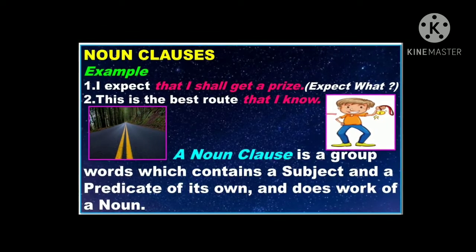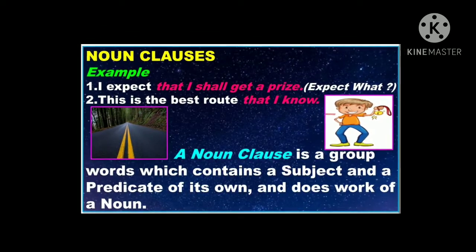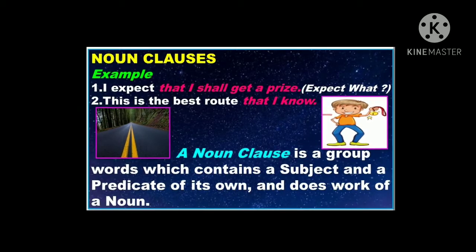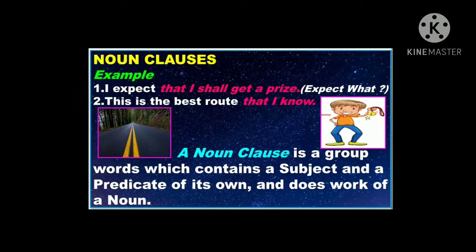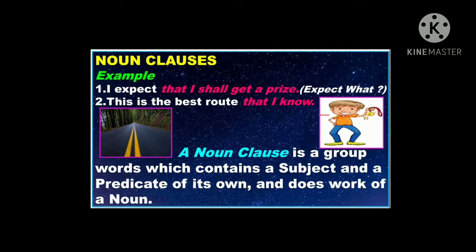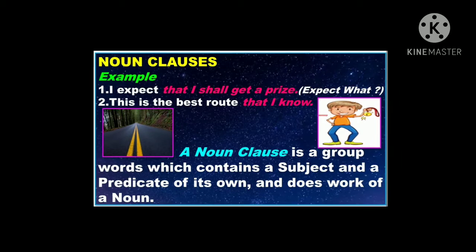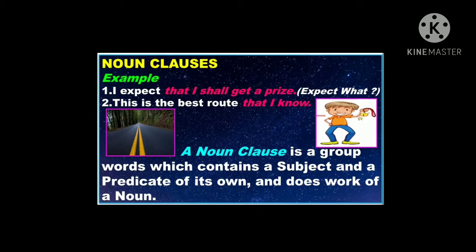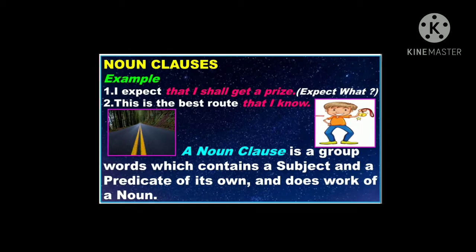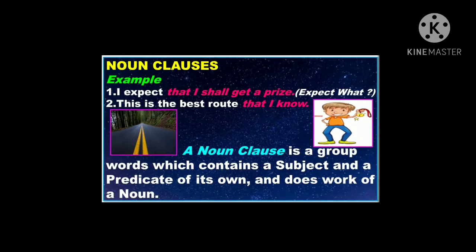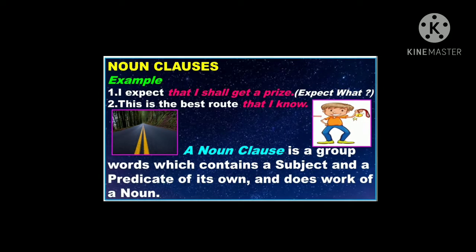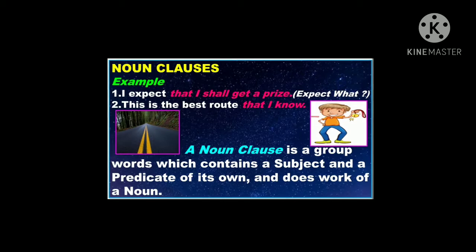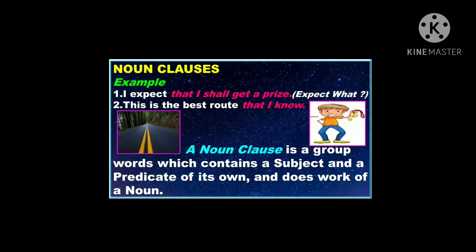To recap: an independent clause is also known as a main clause. It contains a subject and predicate of its own, can stand alone, and gives a complete meaning. But a dependent clause cannot give complete meaning when it stands alone, so it needs a main clause to give complete meaning, though it has a subject and predicate of its own.